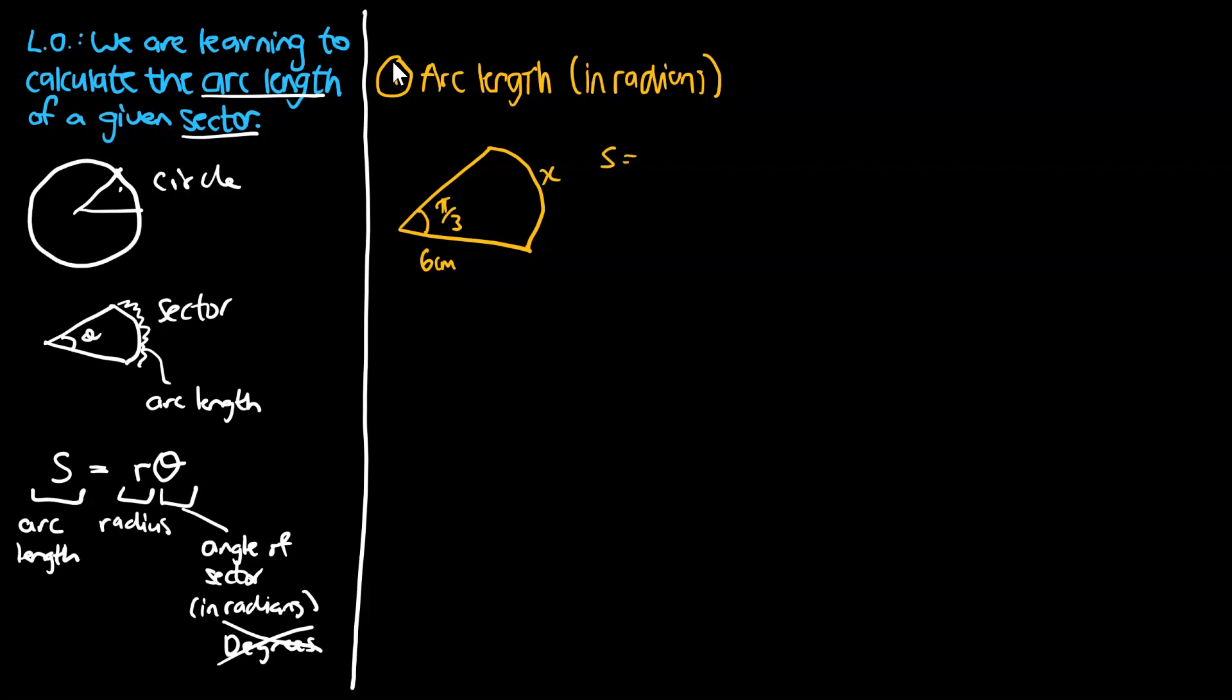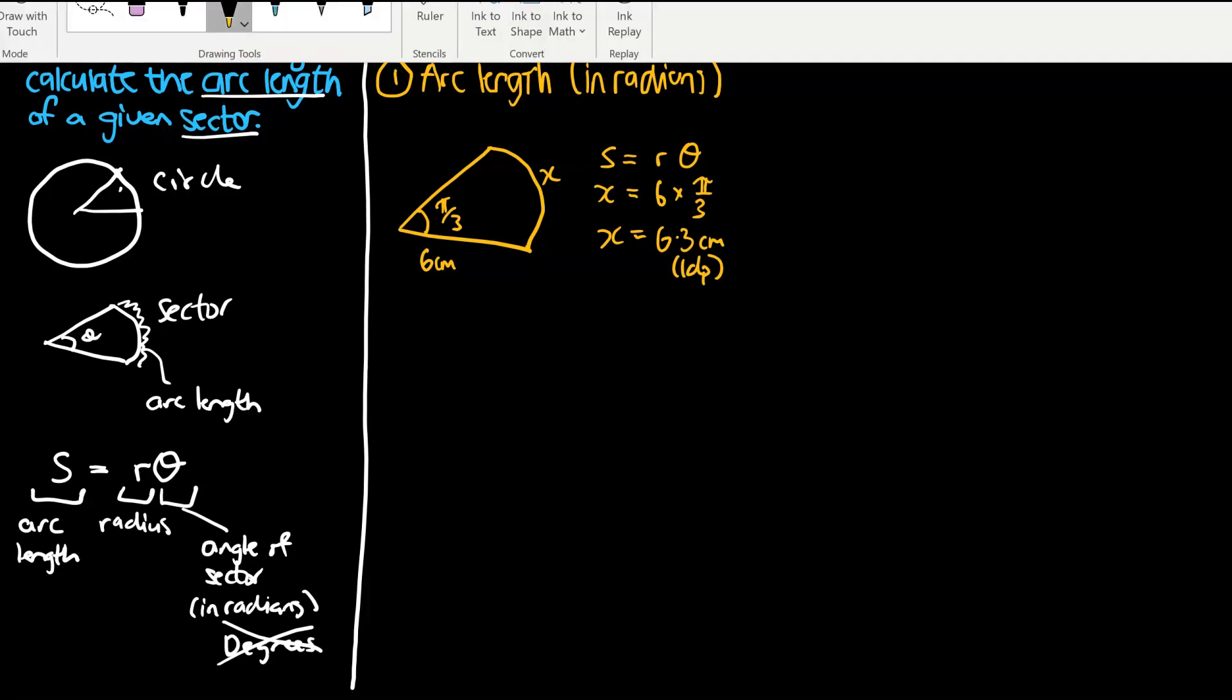S is going to be equal to r times delta. And in our case, x will be equal to r, which is 6 times pi over 3. When you put that into your calculator, that's going to tell you that the arc length is 6.3 centimeters, and I've rounded that to one decimal place. So that's the first question, a relatively straightforward question as well.